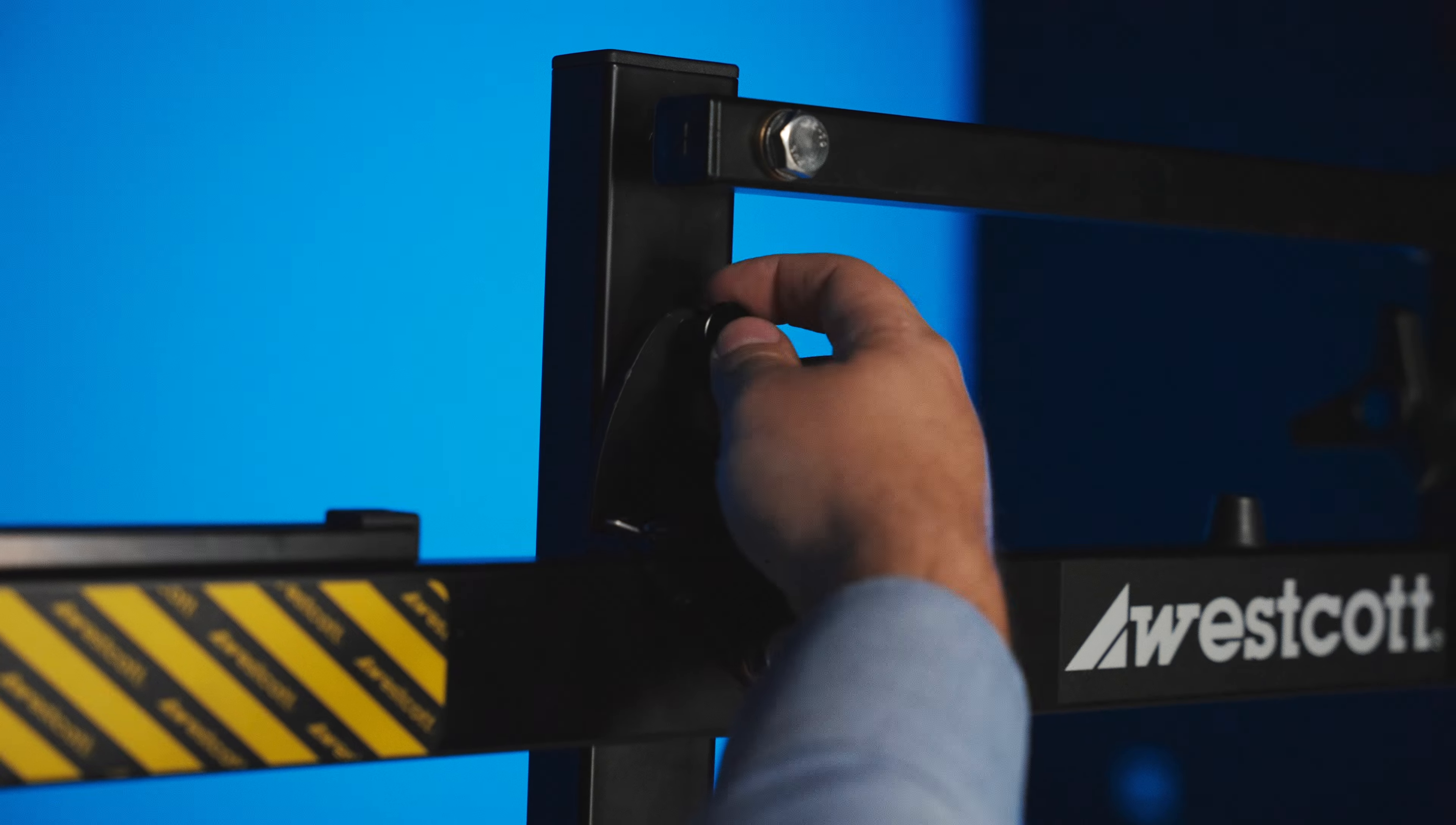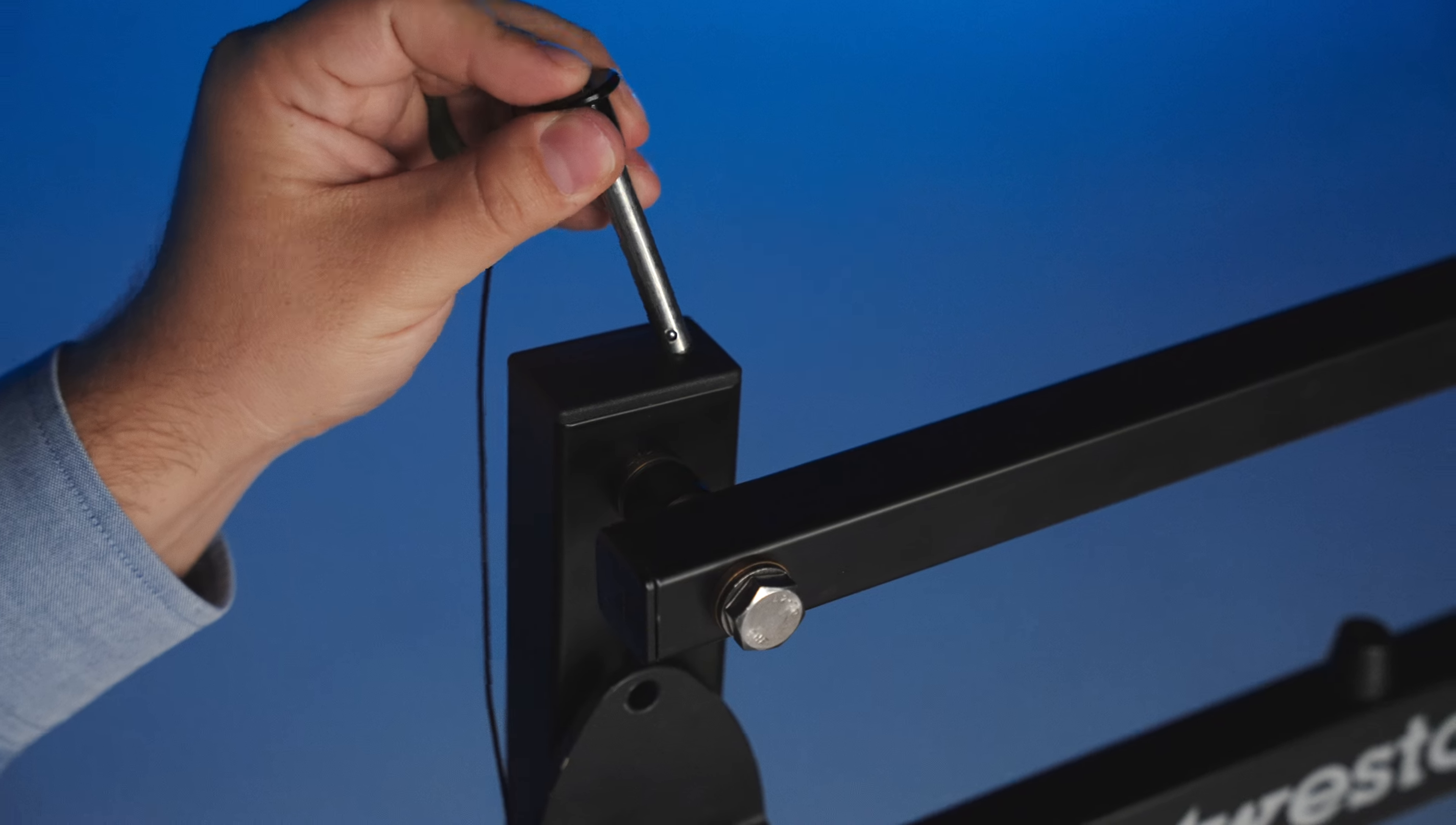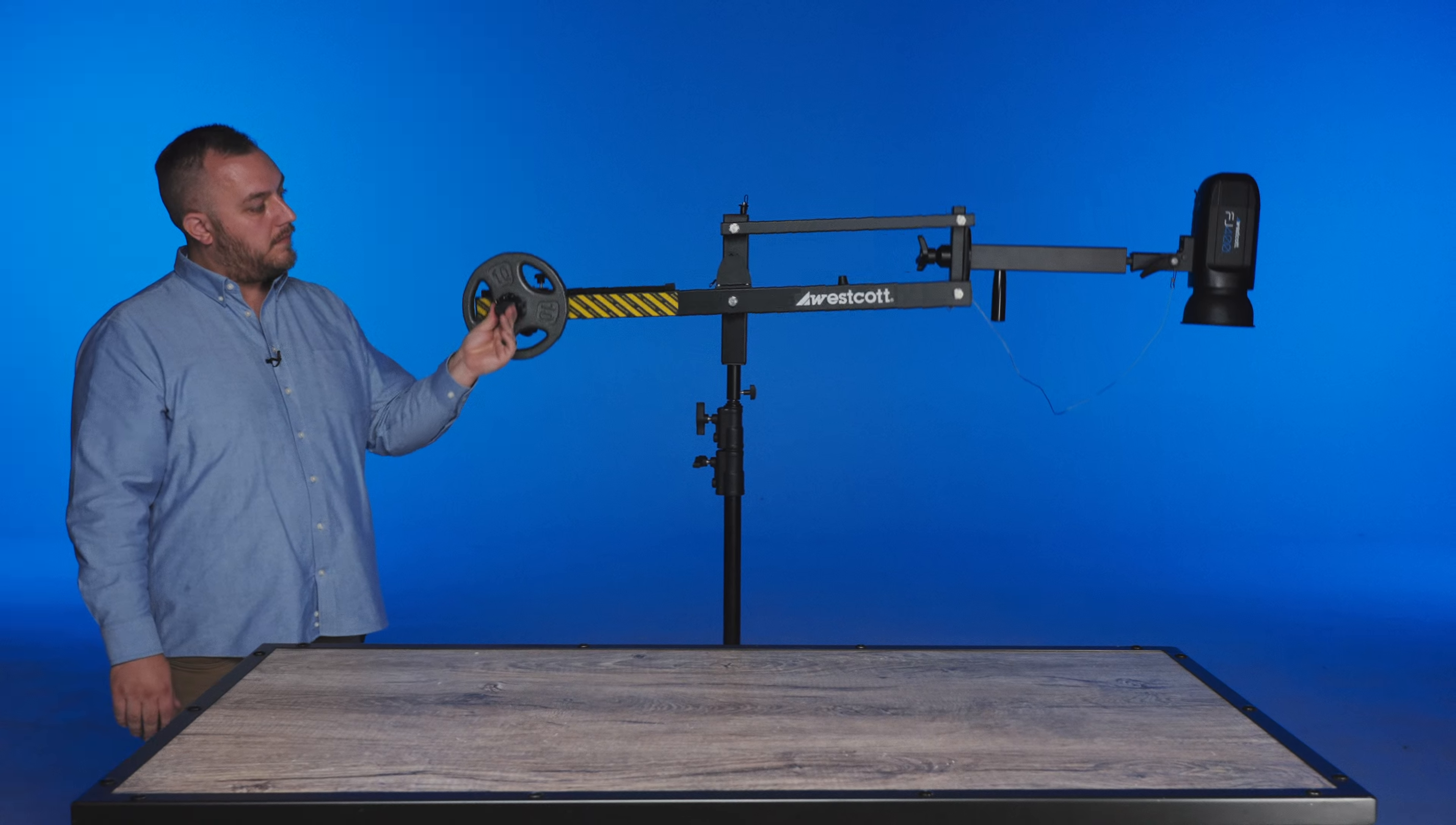While supporting the EZBoom's tail end, press the release button on the locking pin and pull it away from the center column. Store the locking pin and the plastic cap located on top of the center column. Slowly remove your hand from the EZBoom. A properly balanced EZBoom should maintain a horizontal position without the need of any additional support.